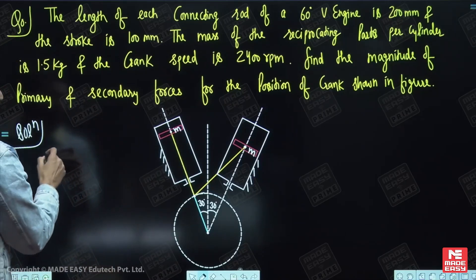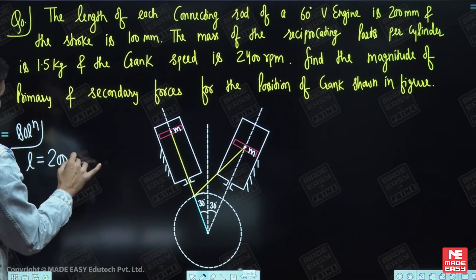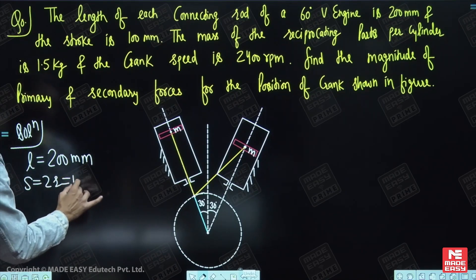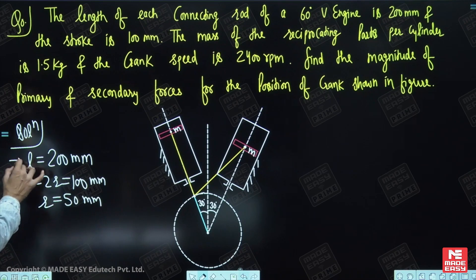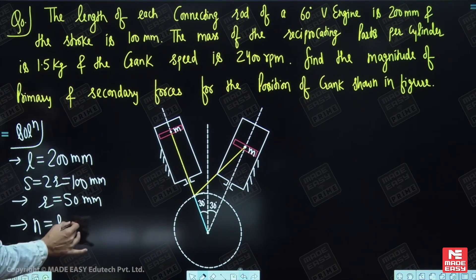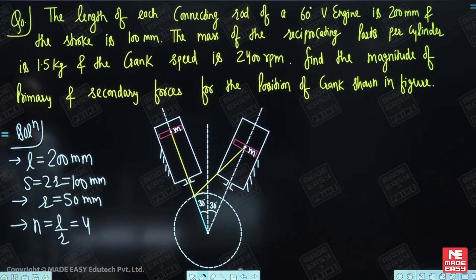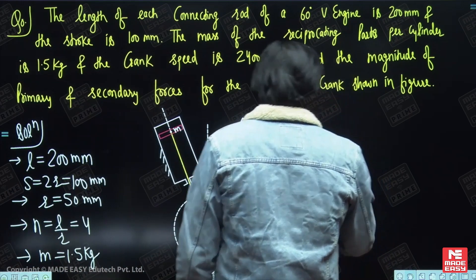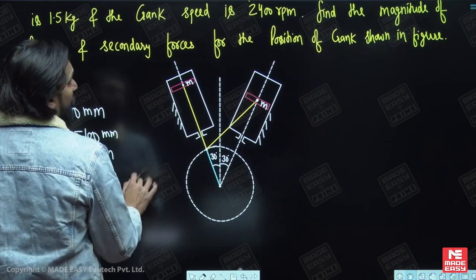The length of each connecting rod of a 60 degree V engine is 200 millimetres. The stroke is 100 millimetres, which is twice the crank radius, giving r as 50 millimetres. If you ask me n, that is l by r, it will be 200 by 50 which is 4. The mass of reciprocating parts per cylinder, small m, is 1.5 kg. The crank speed is 2400 rpm. Find the magnitude of primary and secondary forces for the position of the crank shown in the figure.